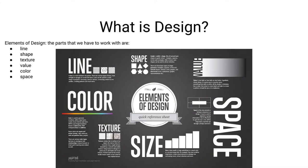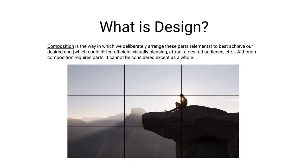Composition is the word we use to talk about the way in which we deliberately arrange these parts — all of these elements of design — in order to best achieve our desired end, which could be efficiency, being visually pleasing, or attracting a desired audience. Although composition requires different parts, it generally cannot be considered except as a whole. All of that Gestalt theory we talked about plays a part in our understanding of what composition is.